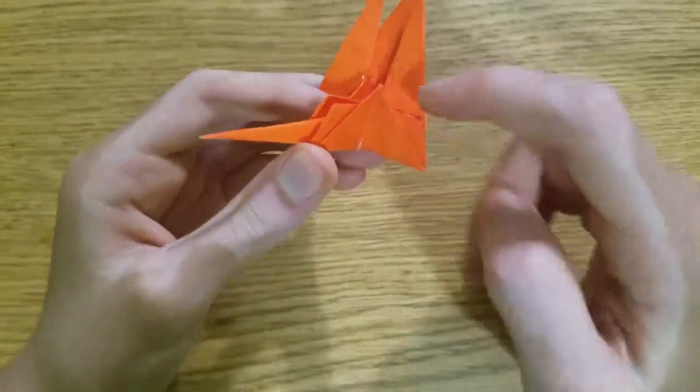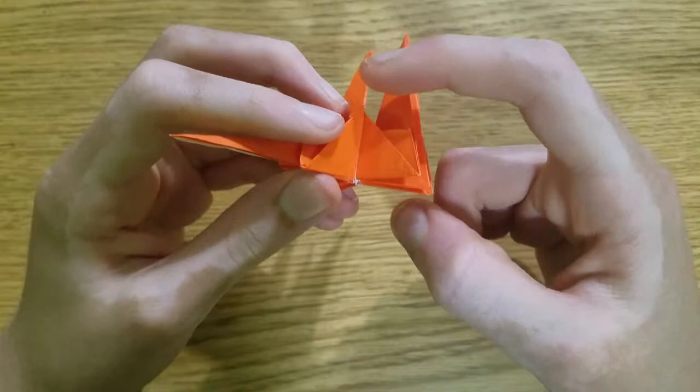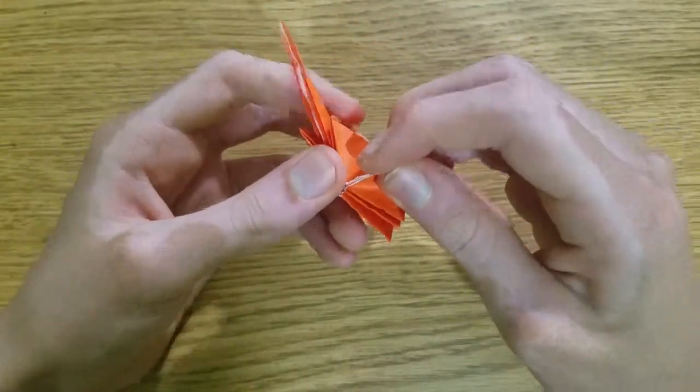What we're going to do with this one is just a simple inside reverse fold, bringing this point to this point first. Make a mountain fold here.